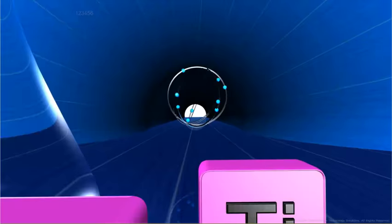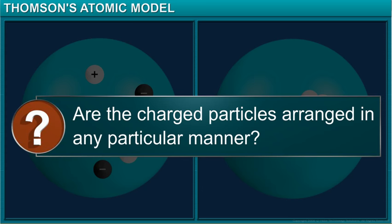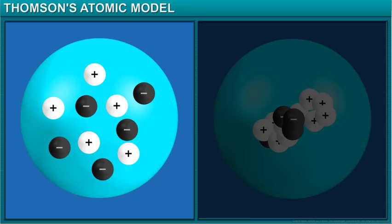In this module, you will learn about Thomson's atomic model. Are the charged particles arranged in any particular manner? Are the charged particles spread throughout the atom or are they concentrated in one place?